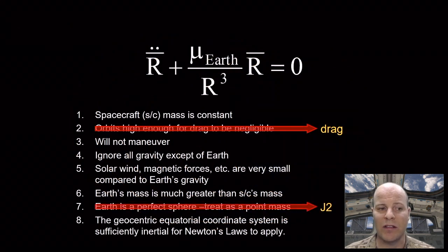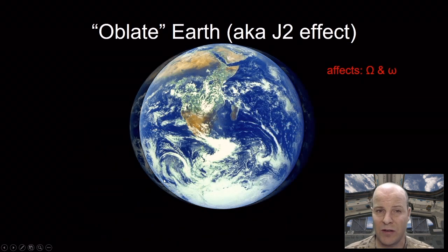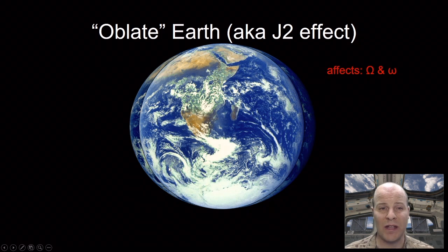The next assumption that we're going to look at is that of Earth being a perfect sphere. It turns out that Earth is not perfectly spherical, it's actually oblate. And that oblateness, or that bulge, something we're going to call the J2 effect, our equatorial bulge,